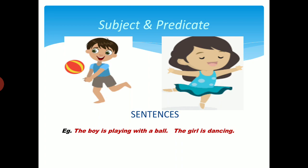Earlier, we have discussed the four kinds of the sentences. Now, we will discuss the two parts of the sentence. All the sentences are divided into two parts. One is subject and another is predicate.